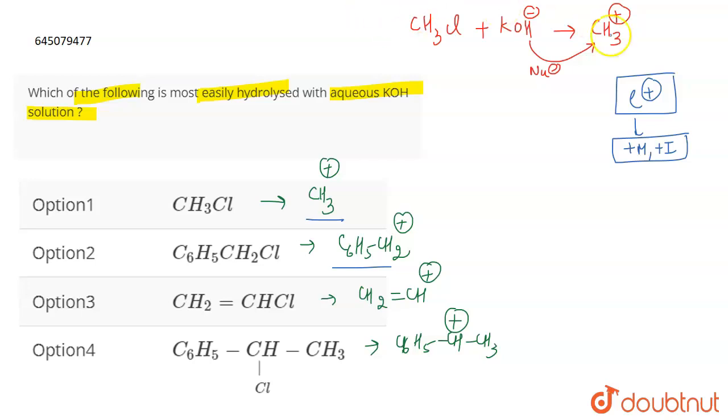Or the carbocation can be stabilized by factors like hyperconjugation or resonance. These are some other factors which affect the stability of the carbocation. Now if you talk about the second option, here what is the case here?